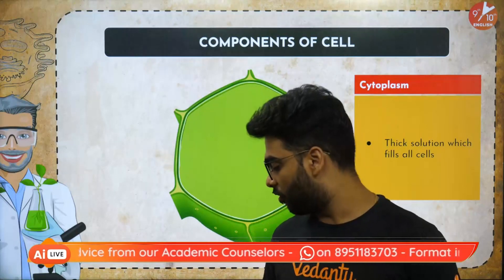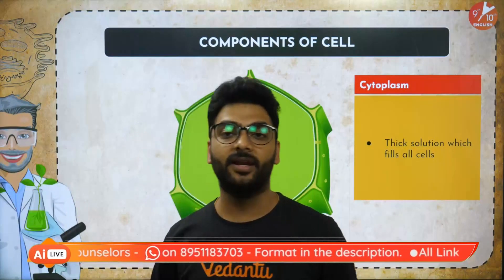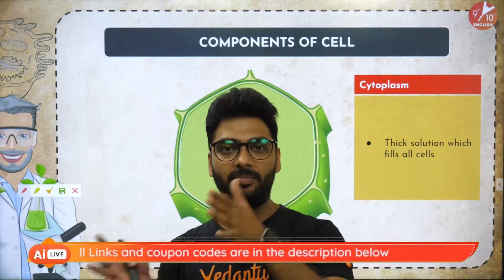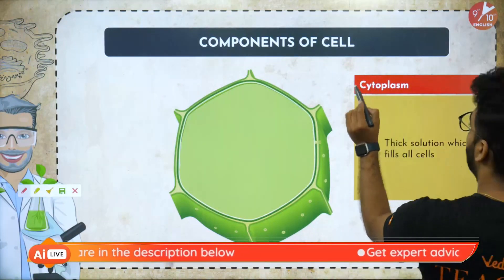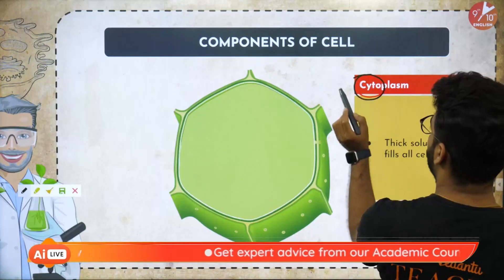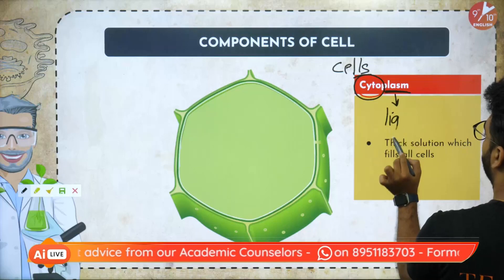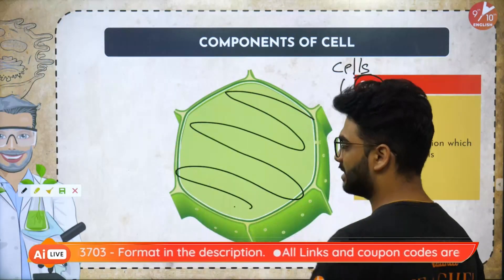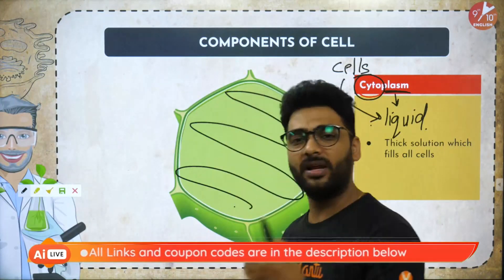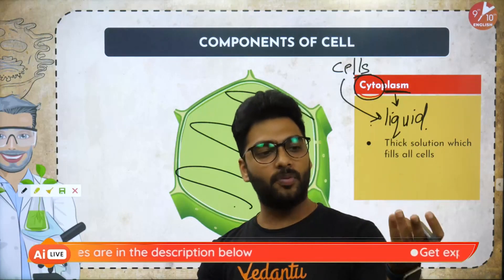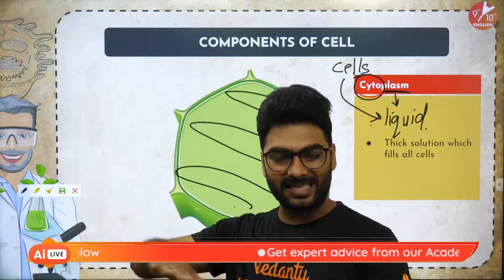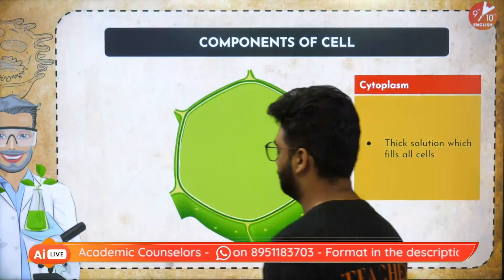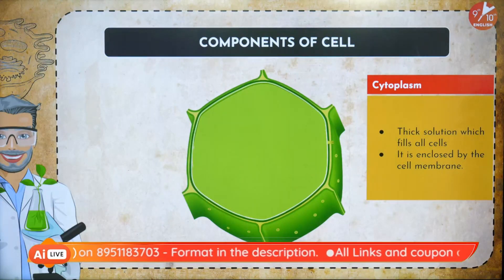Now what is cytoplasm? The word 'cytos' means cell and 'plasm' means liquid, so cytoplasm is the liquid of the cell. The entire cell is filled with cytoplasm — it is like a jelly. All the organelles of the cell, like the mitochondria, ribosomes, lysosomes, and vacuole, are suspended in the cytoplasm. It is a thick solution enclosed by the cell membrane.